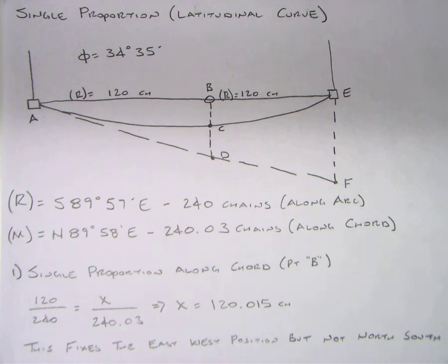What we have here is a township, the south boundary of a township. Remember those were run on a latitudinal curve, so the lost corner has to be replaced actually on the curve, not the chord.